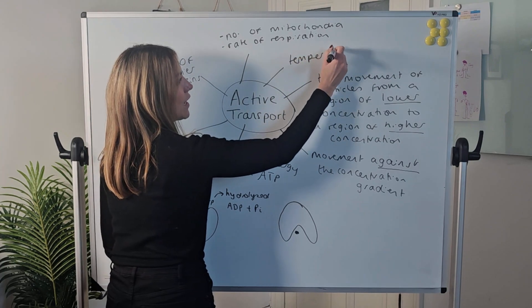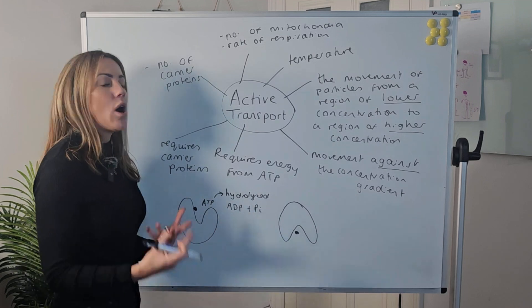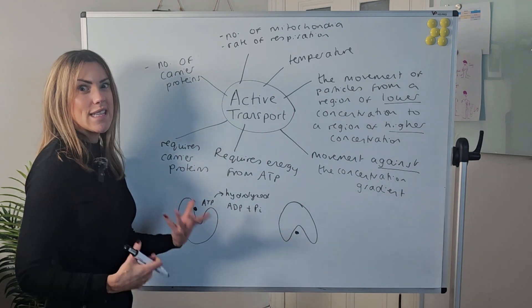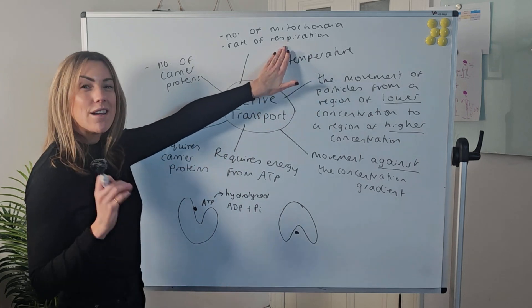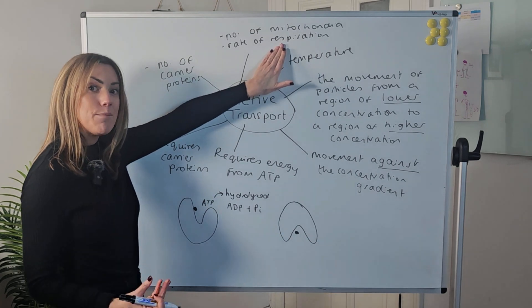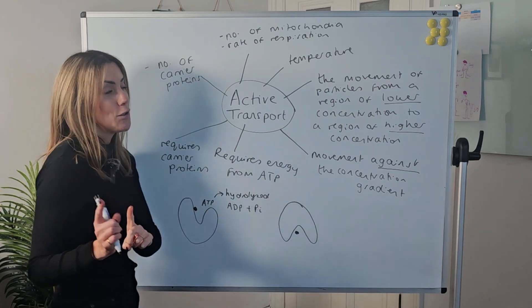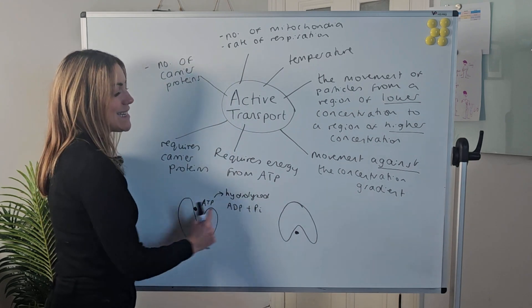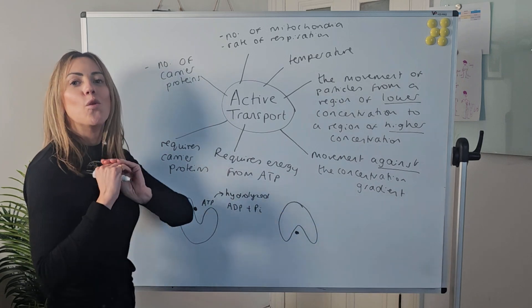You could also consider temperature. If temperature is increased, particles have more kinetic energy and move faster, so active transport can take place more quickly. Temperature also increases the rate of respiration, and if more ATP is produced that would increase the rate of active transport. But be careful — if the temperature gets too high, you could potentially denature these carrier proteins and then active transport would stop.